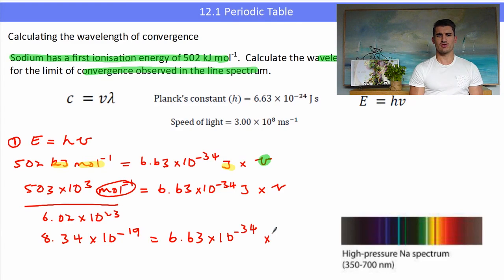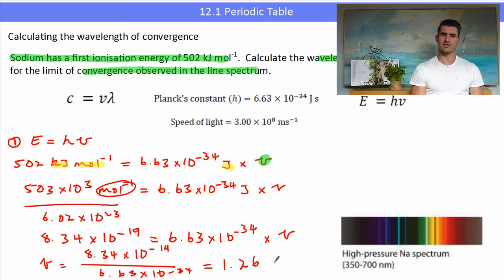Now what I want to do is simply just rearrange this expression to find the frequency. So I will take Planck's constant to the other side where we will have 8.34 times 10 to the minus 19 over Planck's constant. And that will give us the value of the frequency in a unit called Hertz, HZ. That is the unit for frequency. Not sure that you will ever be asked that but the physics people will know exactly what that means. So the frequency is 1.26 times 10 to the 15 Hertz.